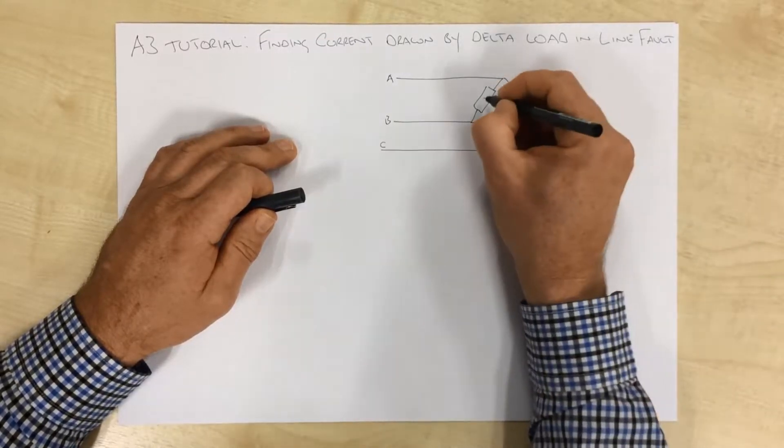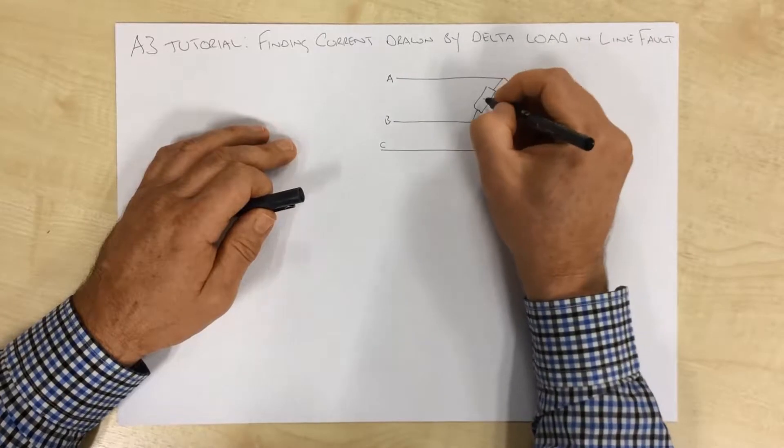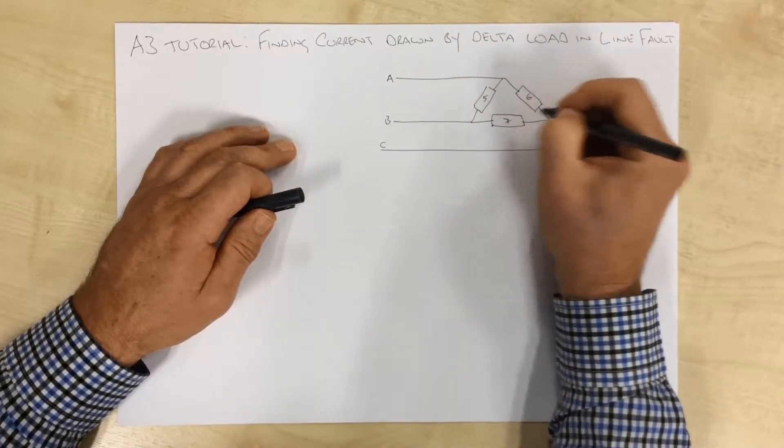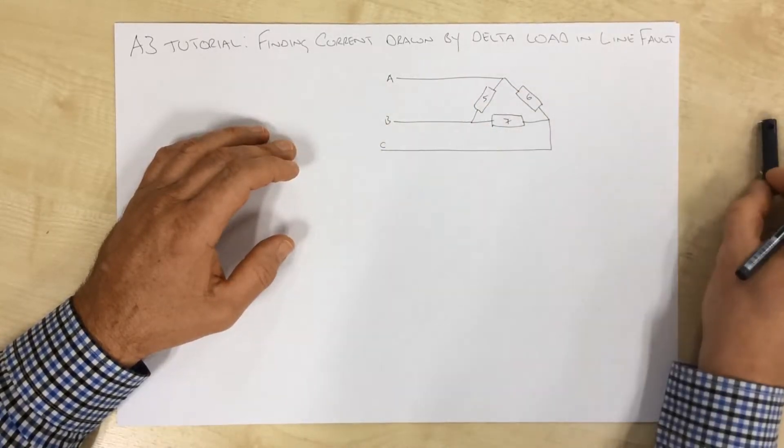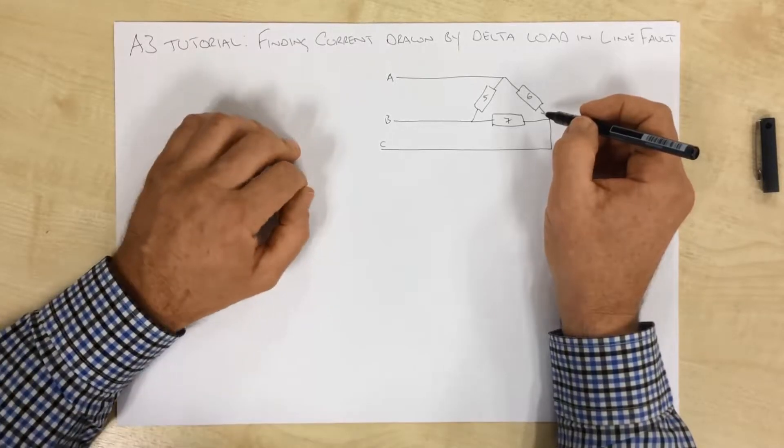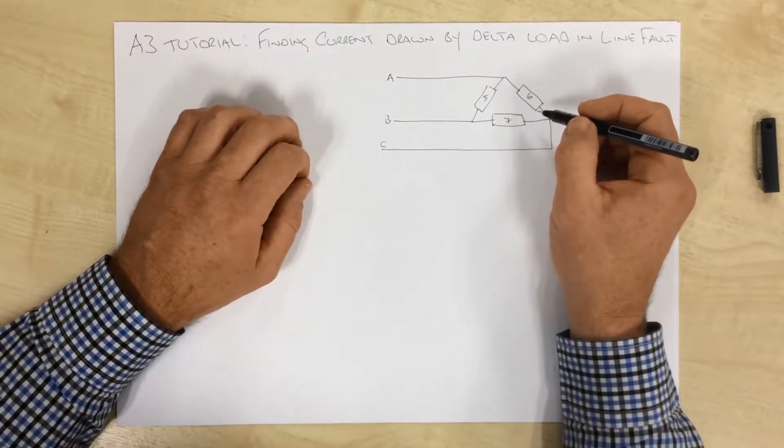We'll give these some impedances just to go through for our calculations, and we'll just call this one 5 ohms, this one 6, and this one 7. Keeping the impedances to be real, purely resistive, just to help with the calculations we're going to be doing.